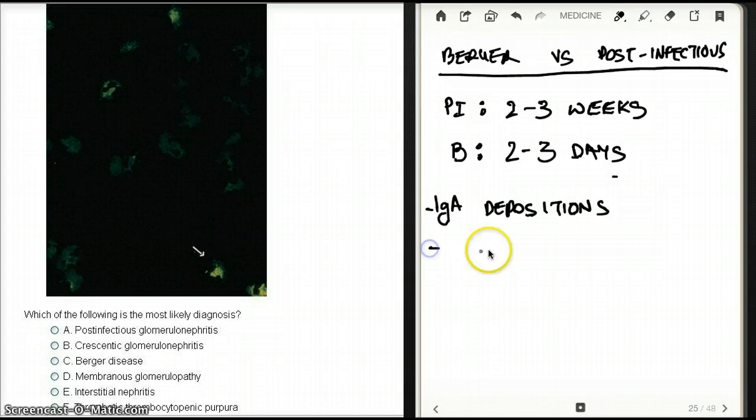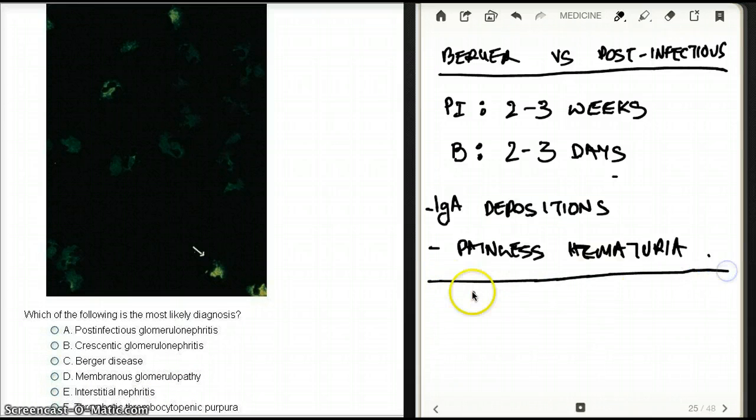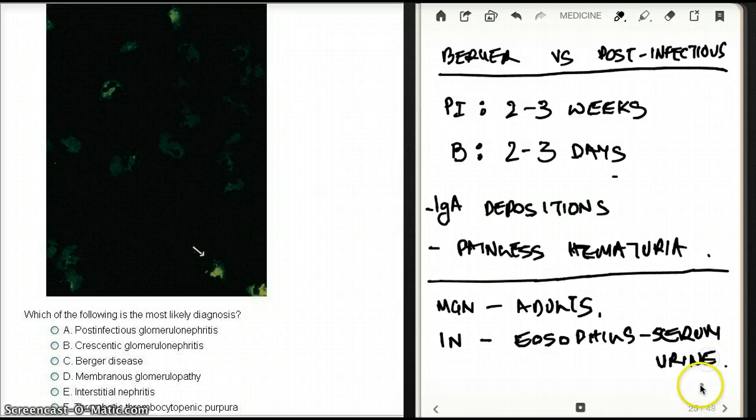Needless to say, with Berger disease we're going to see IgA deposition. Often Berger disease is described as painless hematuria. Choice D - membranous glomerulopathy or MGN is the most common cause of nephrotic syndrome in adults. It's not associated with C-ANCA, and this patient only has hematuria. Interstitial nephritis - we're going to see lots of eosinophils in the serum and urine. That's not the answer.